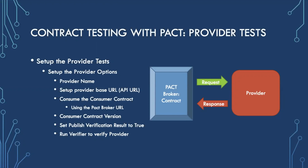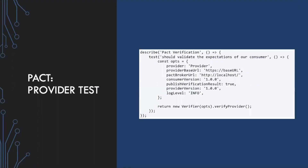Then we need to publish our verification results after we're done. Once we run and consume the contract into our provider tests, we run a verification on our contract. Once that's either passed or failed, we publish those results back to the PACT broker. Our provider test is extremely simple compared to the consumer test — we set up the provider name, the base URL not including the path, the PACT broker URL where our contracts are stored, the consumer version which is the version of the contract we're looking for, and we set publish verification result to true so it publishes the result to the PACT broker.